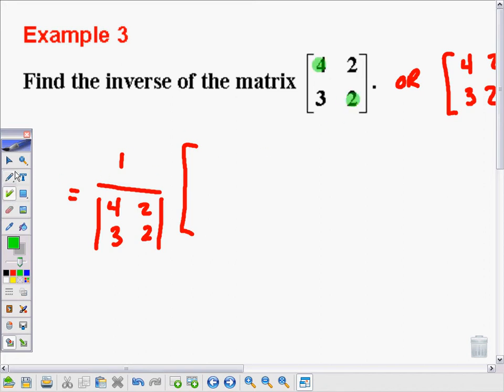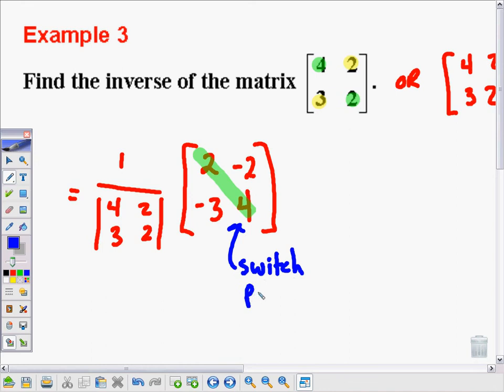It's called the switcheroo, and this is what happens. The 2 and the 4, these guys, switch places. The 2 and the 4 switch places, and then the 3 and the 2 become their opposites, so it becomes negative 3 and negative 2. So these two guys switched places, and these two guys become opposites. If someone ever finds out the name of that, please let me know. You can leave it in the comment section below the video. That's awesome.